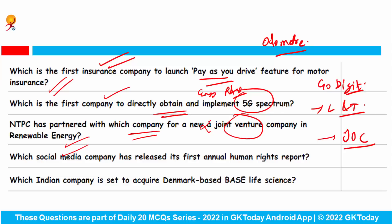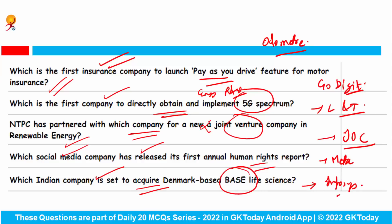Which social media company released its first annual human rights report? This is Meta. Which Indian company is set to acquire Denmark-based Base Light Science? The answer is Infosys.